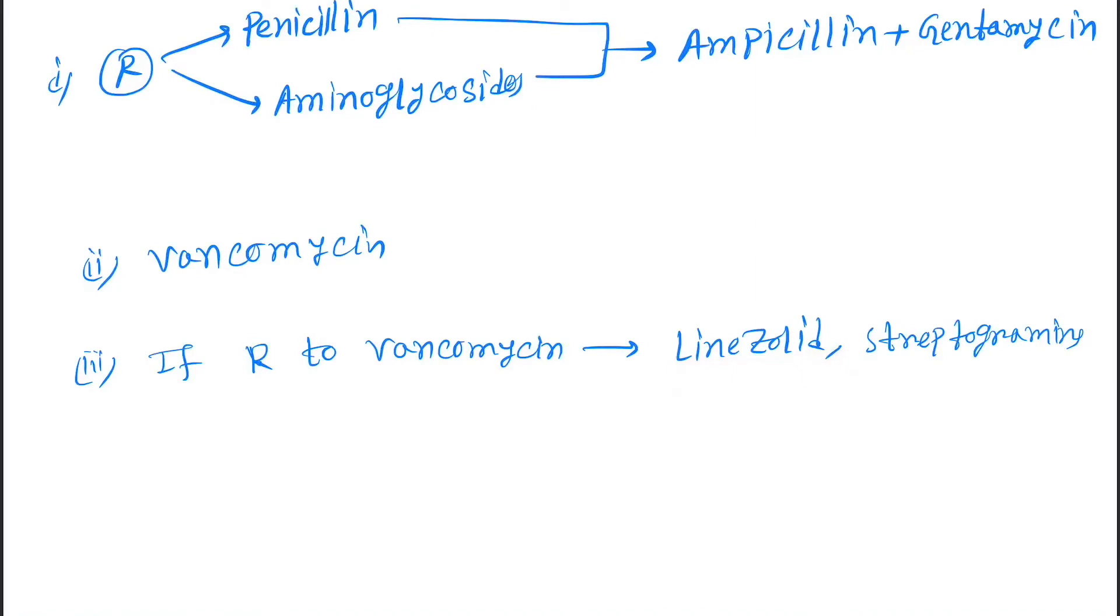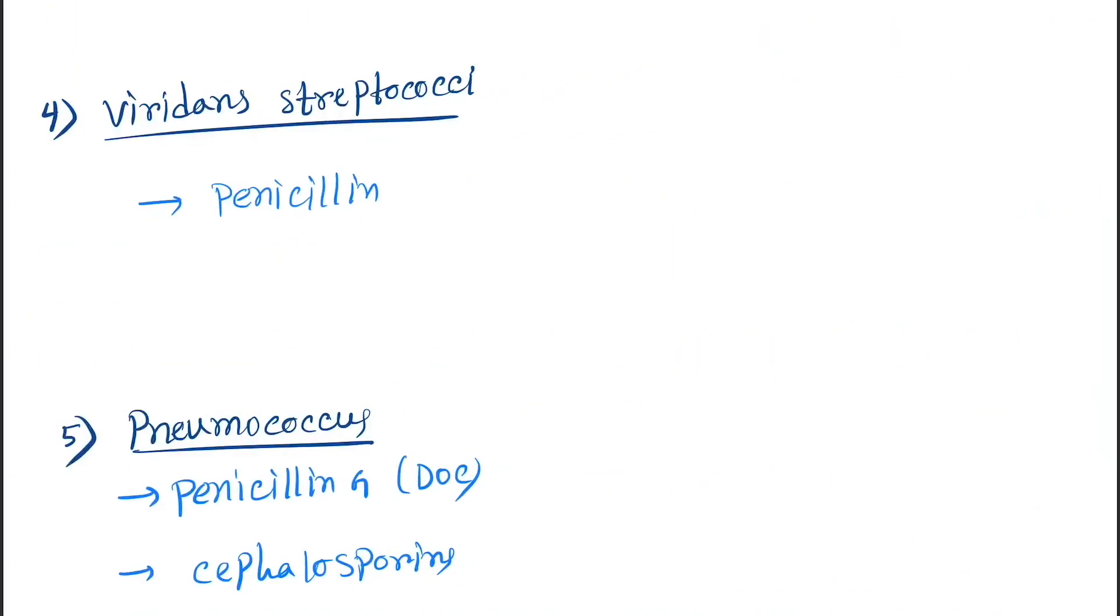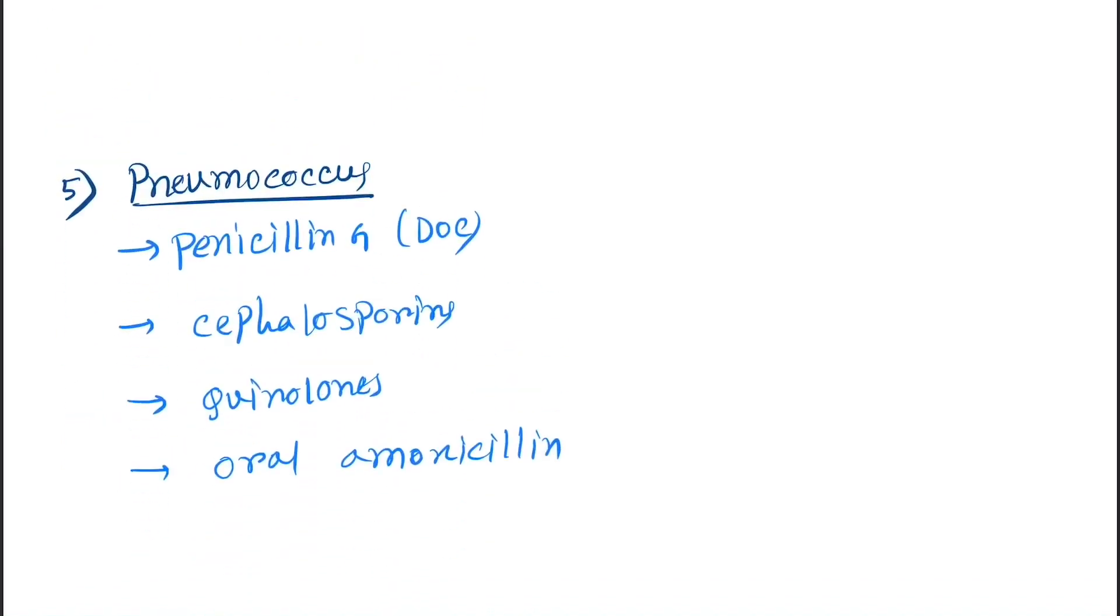Next is viridans streptococci. Drug of choice is penicillin. Pneumococcus, the drug of choice is penicillin G. The other options are cephalosporins, quinolones, and oral amoxicillin.